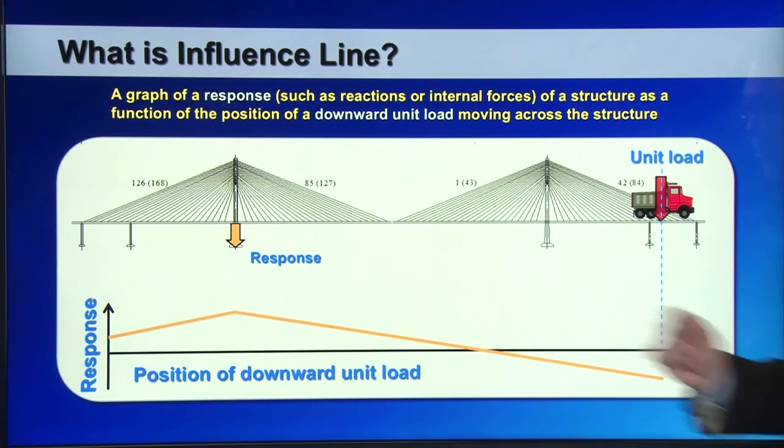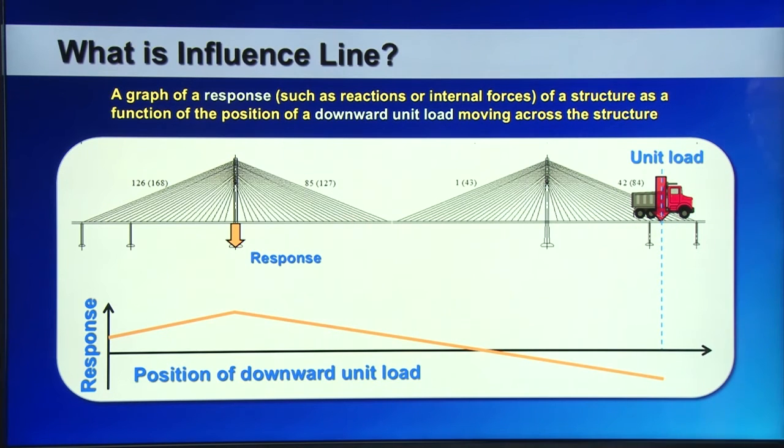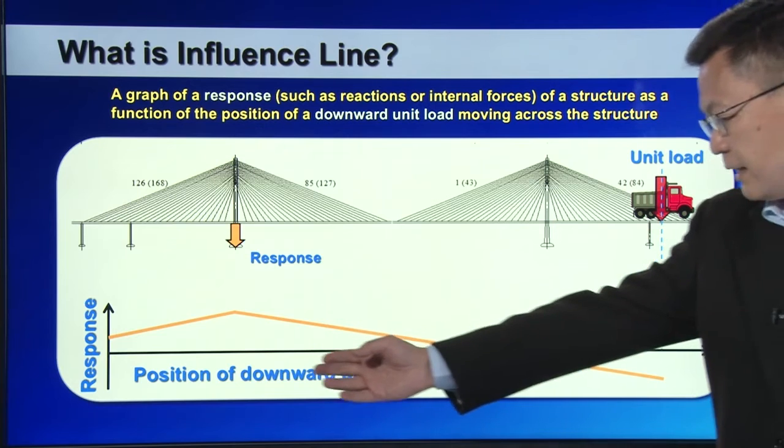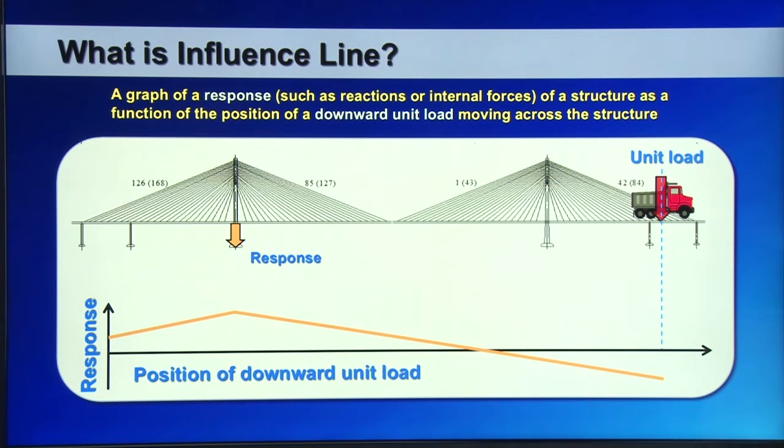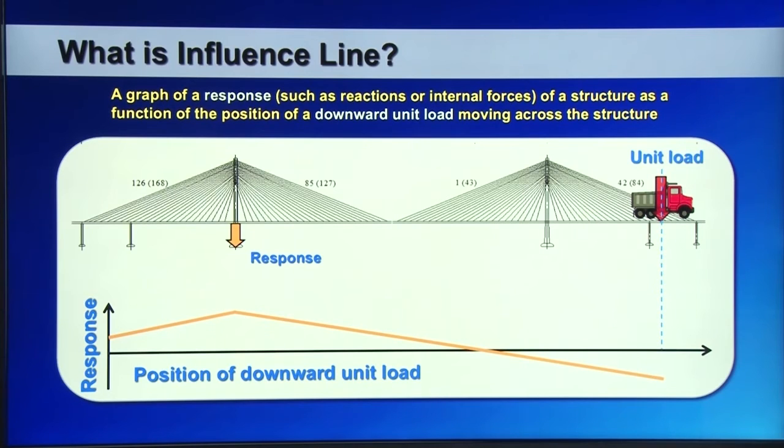So this graphical representation is the influence line for the response at the left tower. Note that the x-axis of the influence line is an indication of the location of the downward unit force, while the y-axis is the indication of the magnitude of the response that you chose.